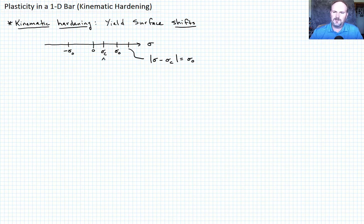And then I'll just formally define this for you. This is the center of the yield surface, and often this is called the back stress.